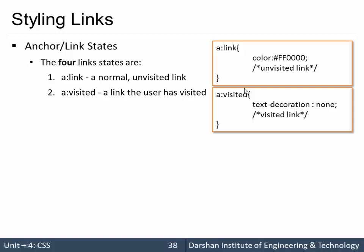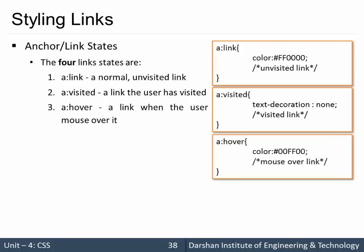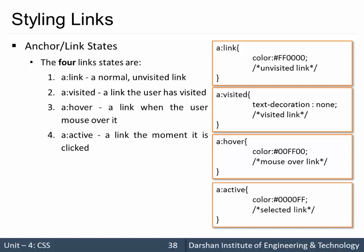We also have two more states. The third state is 'hover' — when I hover my mouse over a particular anchor, I want it to be colored green, so I specify 'a:hover' to color all hovered anchors green. The last state is 'active' — all currently active links should be colored blue. So there are four states: link, visited, hover, and active, and we can specify different properties for each.